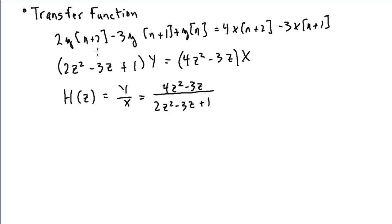And you can see that the coefficients of y and the corresponding advances determine my denominator. I've got 2z squared minus 3z to the first power plus 1, z to the 0 power, or 1. And then on the numerator, I have 4z squared minus 3z. And you might ask, what about if I'm given the difference equation in the delay form?